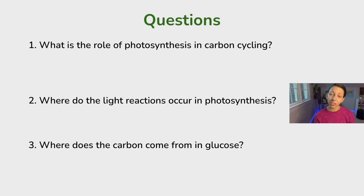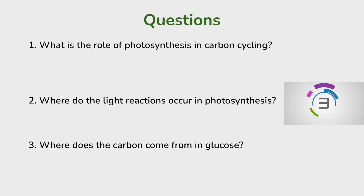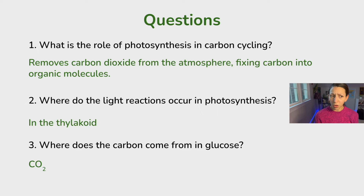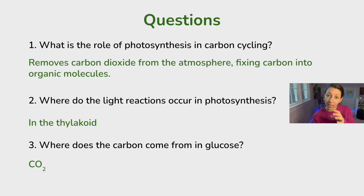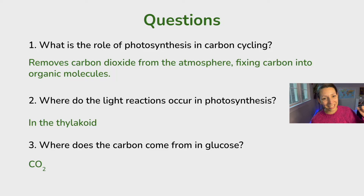A few review questions. What is the role of photosynthesis in carbon cycling? It removes carbon dioxide from the atmosphere, fixing carbon into organic molecules. Where do the light reactions occur in photosynthesis? In the thylakoid. And where does the carbon come from? From carbon dioxide.